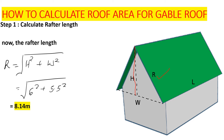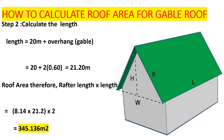Now that we have the rafter length, we can get the area. We multiply the rafter length by the new length of the roof, which includes the overhangs. Our house length is 20 meters, and the overhang on each gable end is 600 mm (0.6 m). With two ends, the total addition is 2 × 0.6 = 1.2 m. So the new total length is 20 + 1.2 = 21.2 meters.